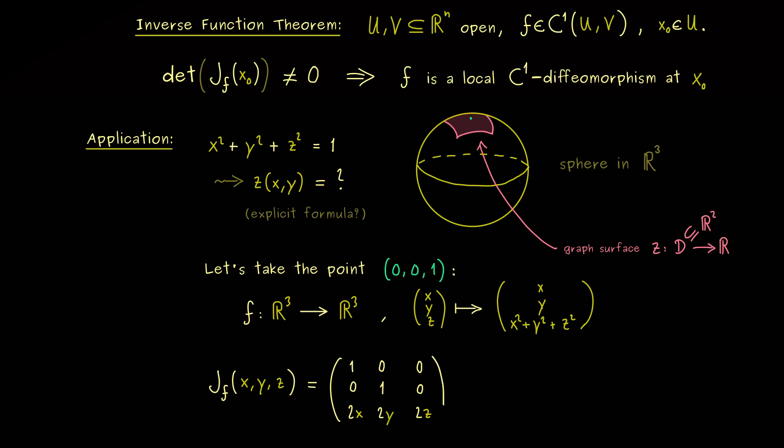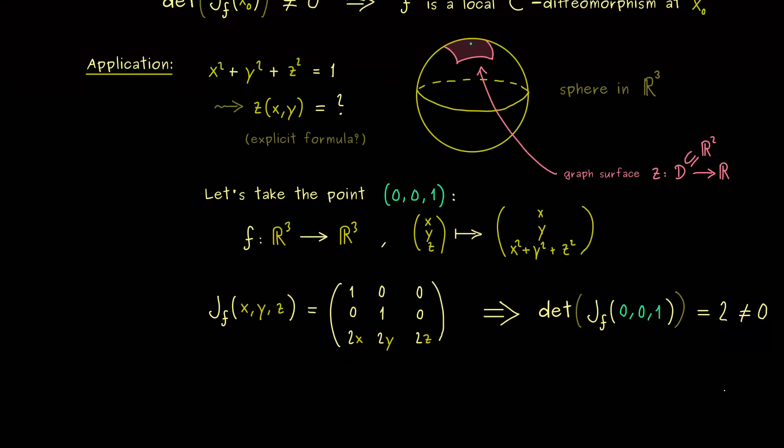This is our 3 times 3 matrix. And then you immediately see, at our point (0, 0, 1), we have the determinant as 2. Hence our assumption from the inverse function theorem is satisfied. Hence we can simply apply it and find our local inverse function of f.